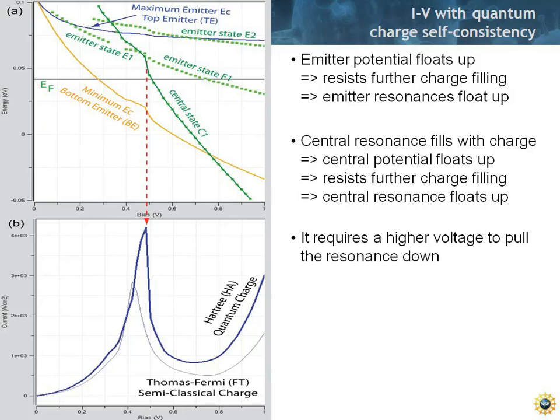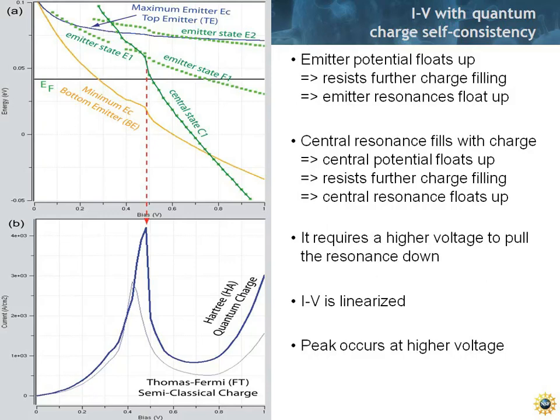Meanwhile, you're coupled stronger to these energy states E1 and E2 and the current keeps rising, so it requires a higher voltage to pull the resonance down. The IV is sort of linearized and the peak occurs at a higher voltage, just by including the quantum charge in the emitter and the collector — you change the relationship between the states in the emitter and in the central device.